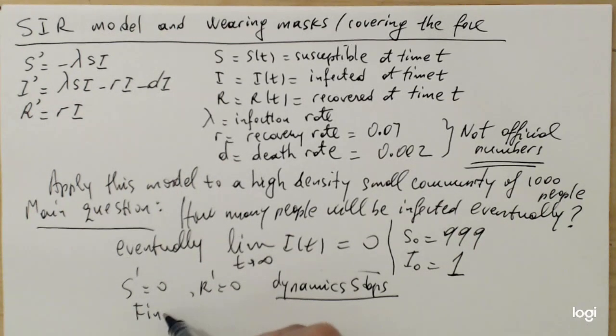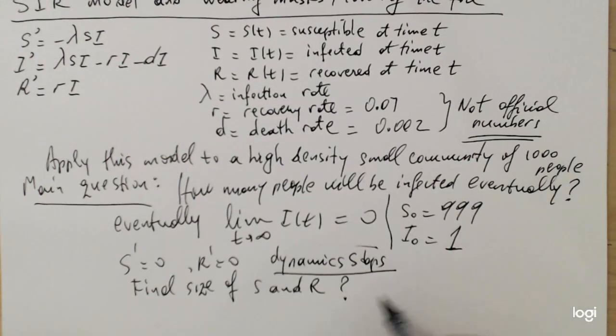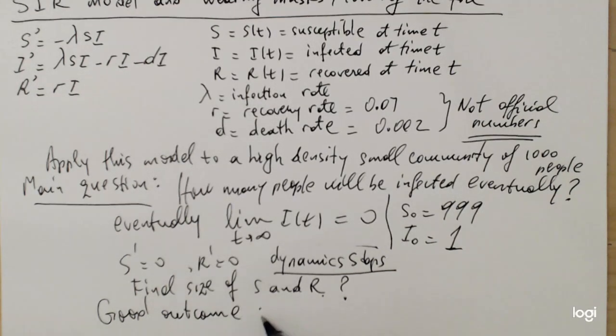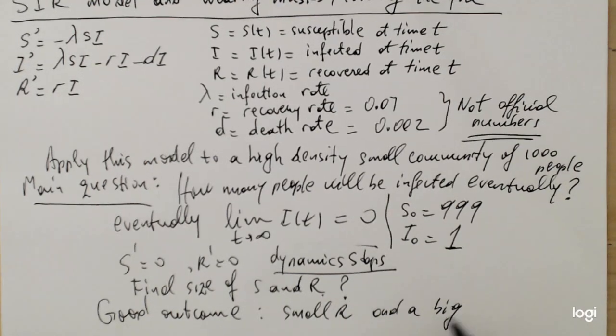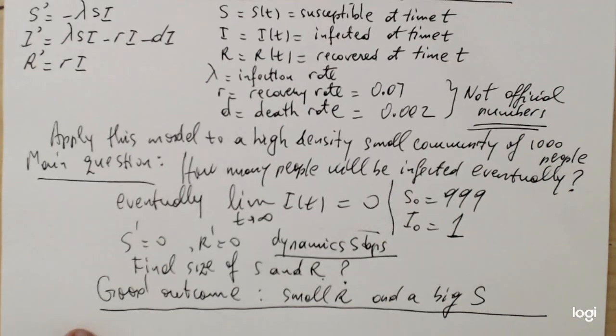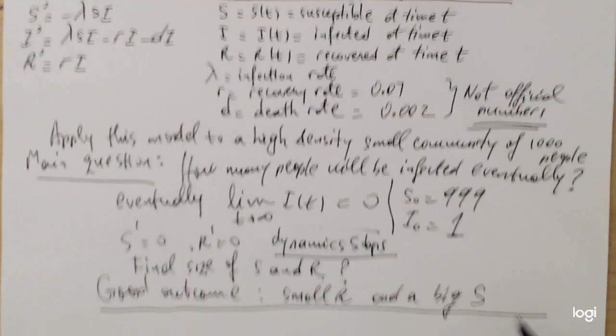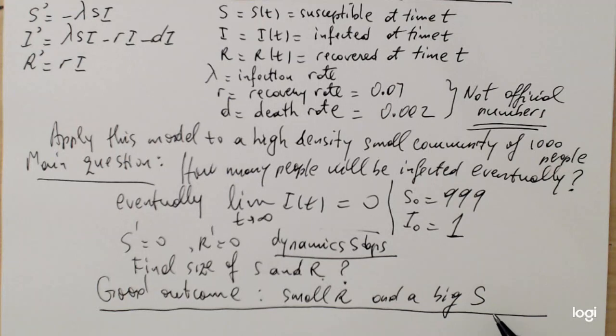So then the question is, what is the final size of S and R? Notice that the smaller the size, or let's put it this way, the bigger the size of R is, the more people were infected. That's because each recovered individual was one who was infected beforehand. So basically a good outcome is a small R and a big S final value. A small R means not so many people were infected, and that's equivalent to having a big final value of S(t). On the other hand, if the model predicts a very small value of S, maybe close to zero, that means everybody or nearly everybody was infected.